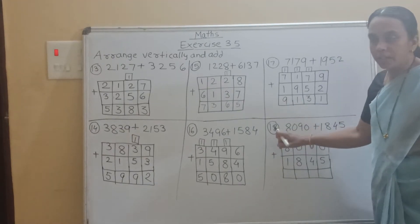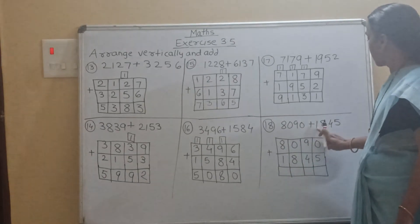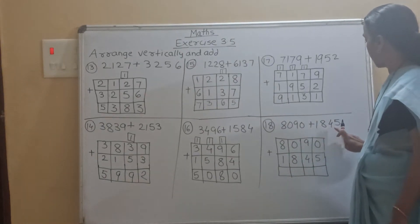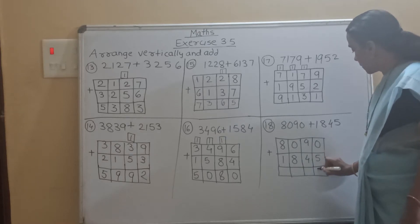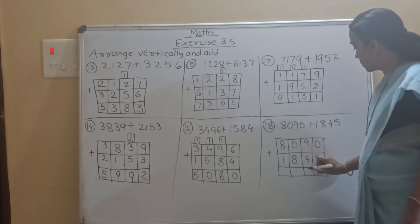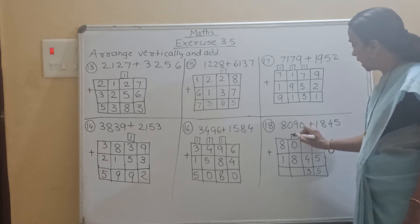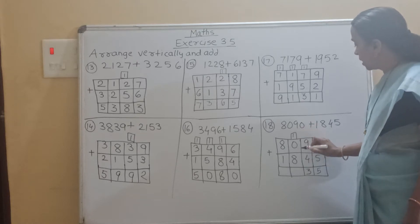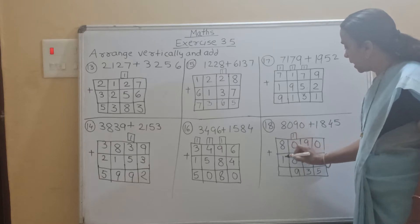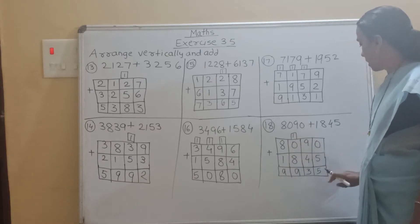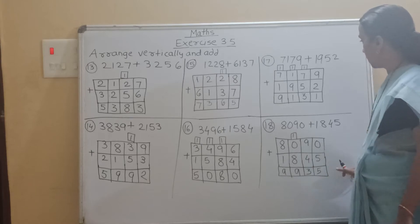Now see the 18th question: 8090 plus 1845. So 5 plus 0 is 5. Then 9 plus 4 is 13, carry 1. Then 8 plus 1 is 9. So the answer is 9935.